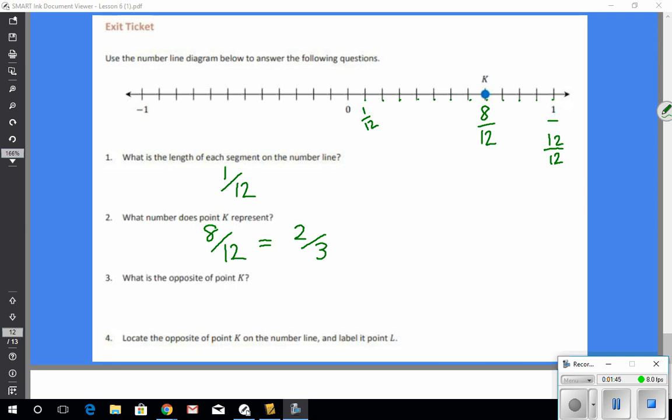And then the next question said, what is the opposite of point K? So just like integers have opposites. So if I see that one is right here and its opposite would be negative one, our fractional portions are going to be exactly the same thing, but on the opposite side to the left of zero. So when I start counting, the first tick mark to the left of zero is going to be negative one twelfth, negative two twelfths, negative three twelfths, four, five, six, seven, eight. So negative eight twelfths.